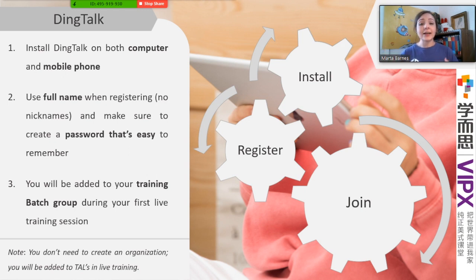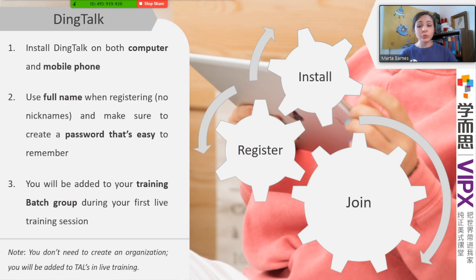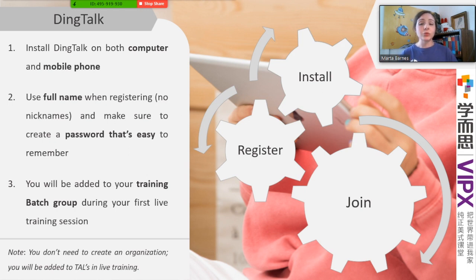Finally, you're going to eventually join our organizational group. This isn't going to happen today during our session — it's going to be during your first live training day. Your trainer that day is going to give you a link and it's going to join you to our company's organization for TEL. It might prompt you after registration to create your own, but you don't have to do this. You can just join TEL's later on. Once you're joined with our link, we'll be able to add you to your batch group and you'll have contact with everybody in the company.